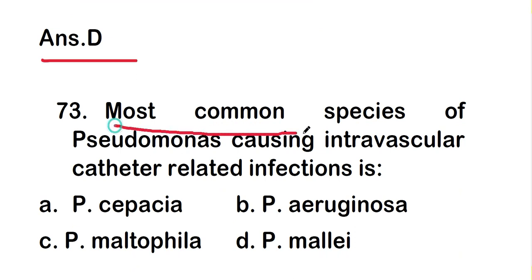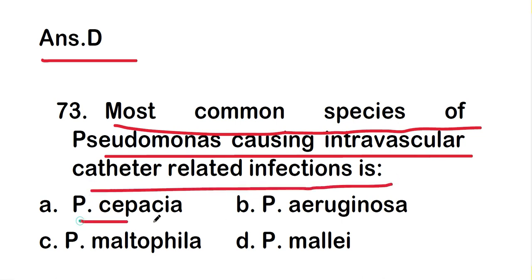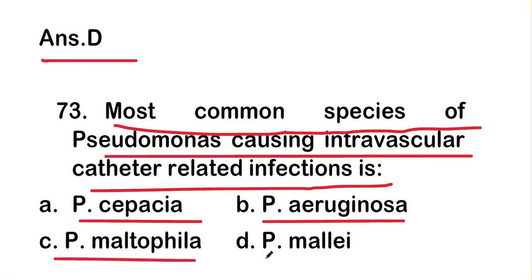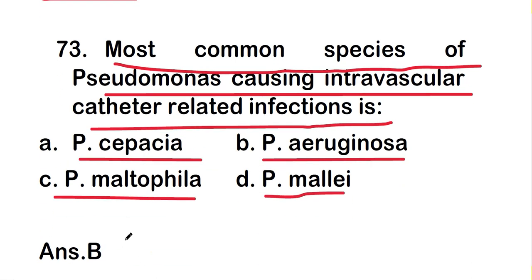The next question: the most common species of Pseudomonas causing intravascular catheter-related infection is Pseudomonas cepacia, Pseudomonas aeruginosa, Pseudomonas maltophilia, or Pseudomonas mallei? The right answer is option B, Pseudomonas aeruginosa.